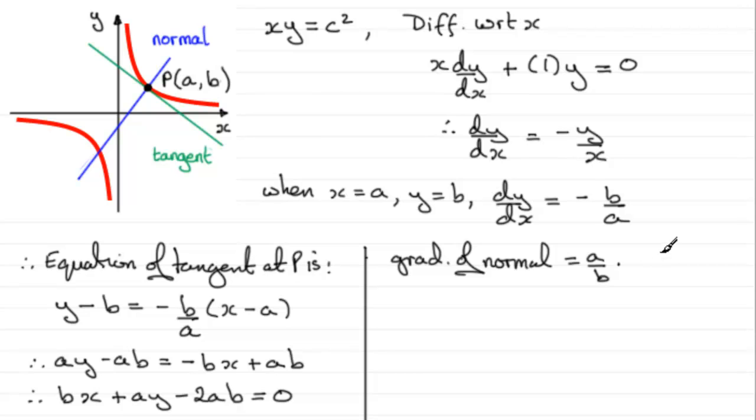So therefore, the equation of the normal, it's going to be Y minus Y1 again, so it's going to be B, equals the gradient A over B, multiplied by X minus X1, X1 being the A.